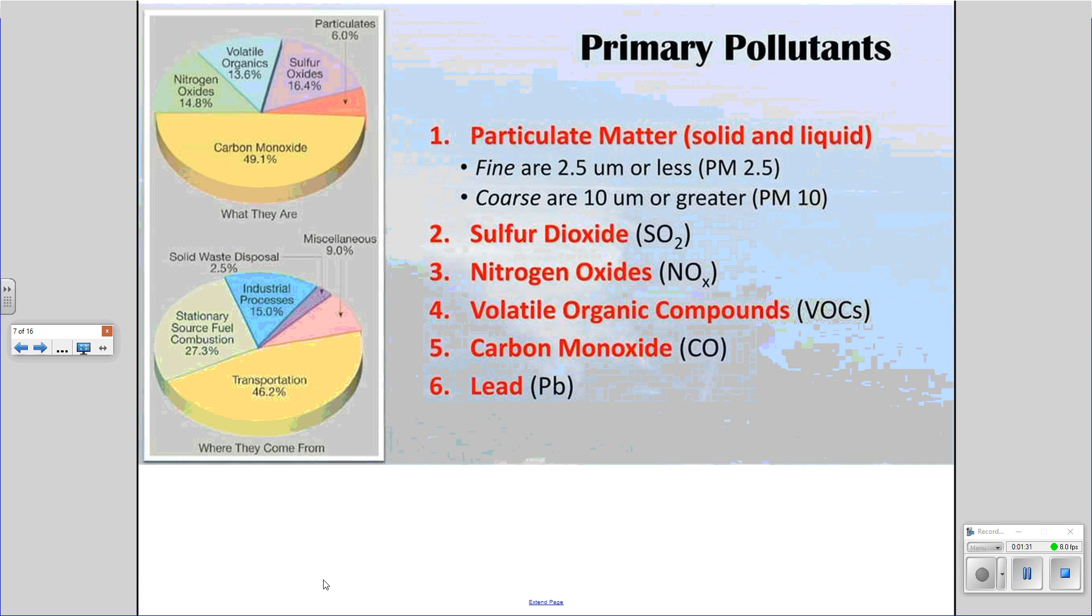Those would be, for example, your soot, your dust particles, sand, any type of solid particles that you can find. Debris from construction materials that get up into the air, asbestos, anything that's small and solid. The other example we have is sulfur dioxide, and we have natural and anthropogenic sources for sulfur dioxide.